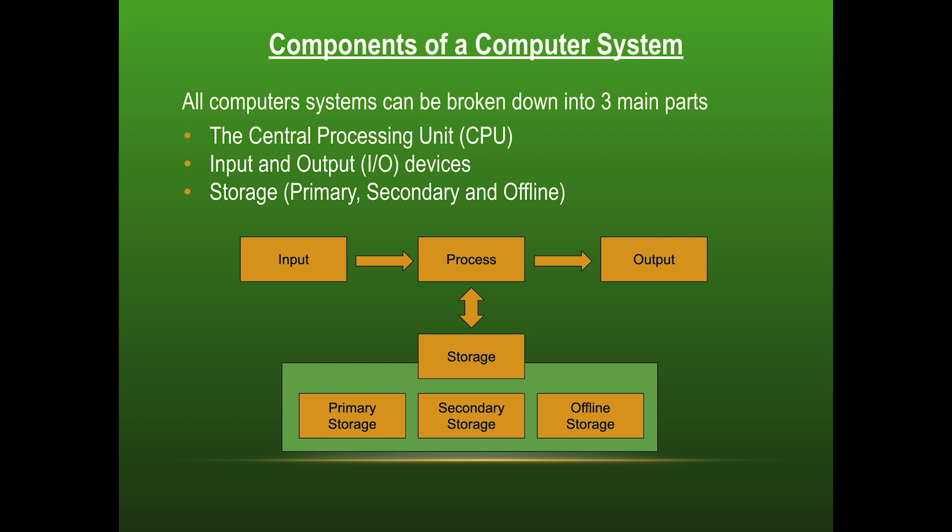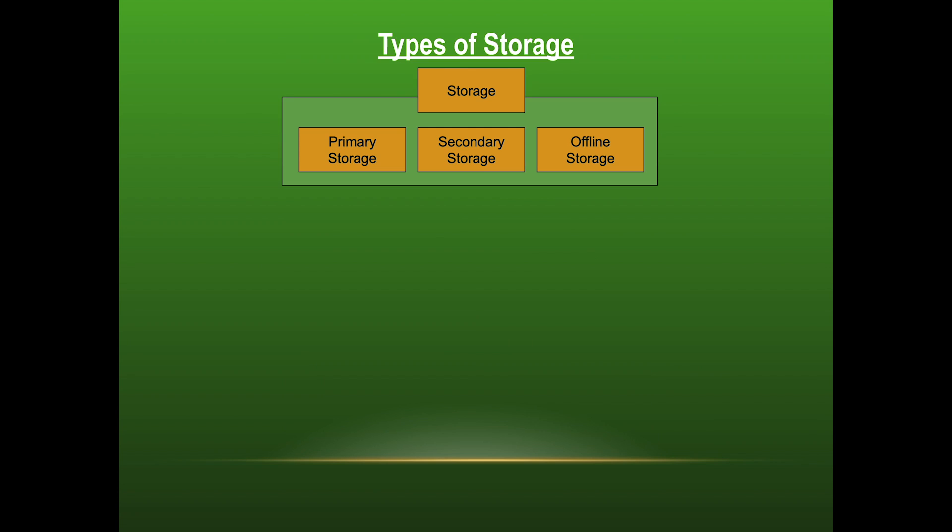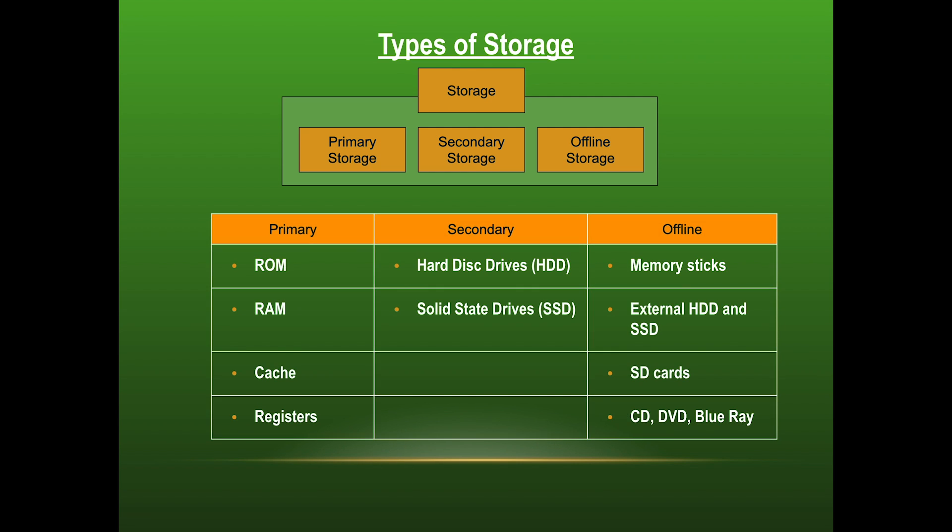So all computer systems can be broken down into three main parts that consist of the central processing unit or processor and the IO devices, inputs and outputs as well as storage devices. And today we're going to look at how those storage devices are broken down into these three categories of primary, secondary and offline storage. Within these three main categories are different devices that you're going to need to learn including their purpose and how they function.